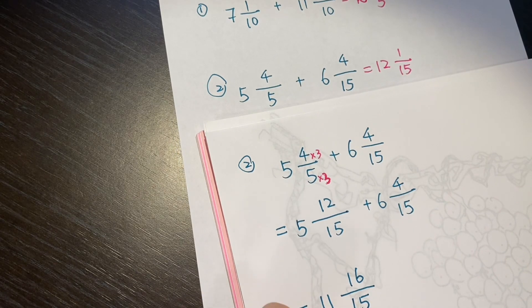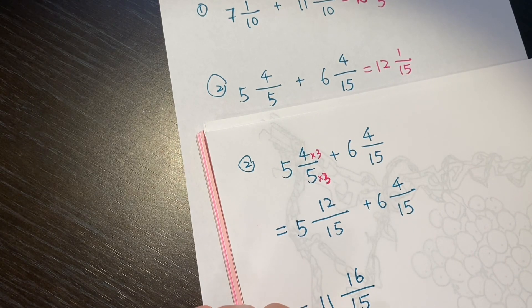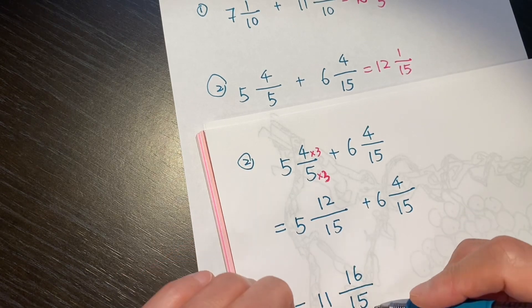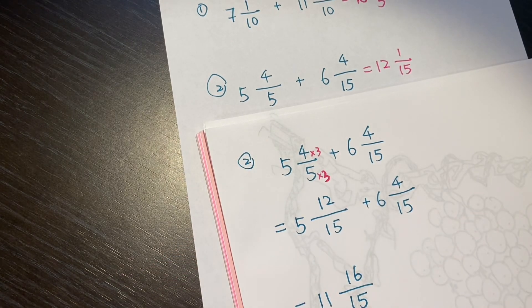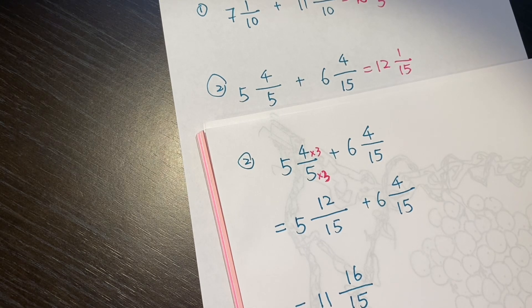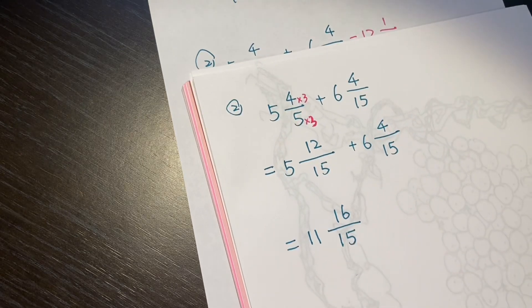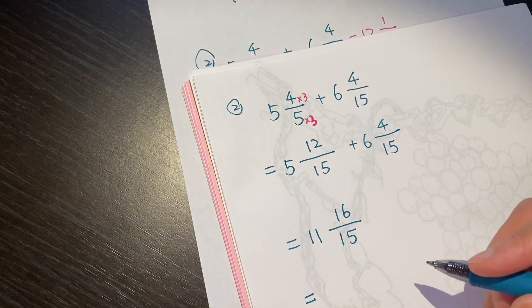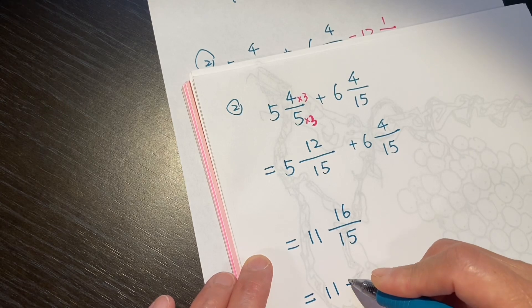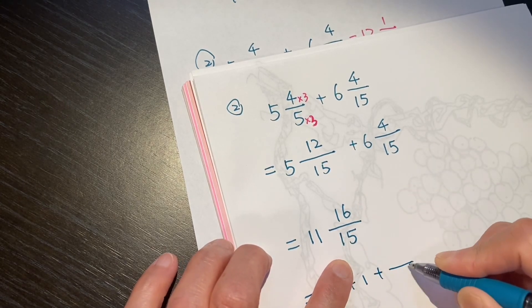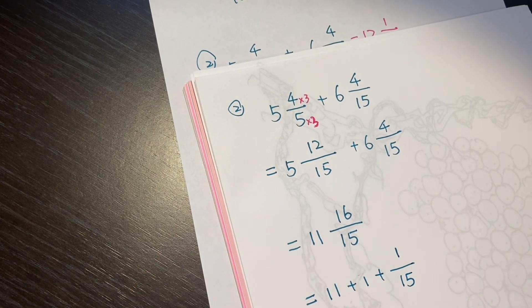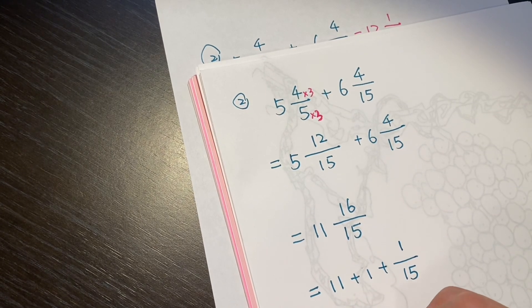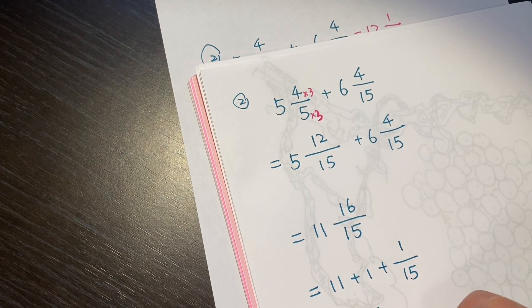Now, we see 16 over 15. This is not a true. This is the numerator is bigger than the denominator. In Chinese, we call it 假分数. Fake fraction. Or, it's just not comfortable, right? You change into mixed number. So, it becomes 11 plus 1 plus 1 over 15. This 1 means 15 over 15, right? So, it's 12 and 1 over 15.